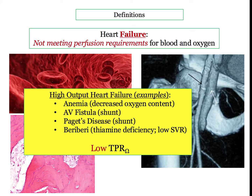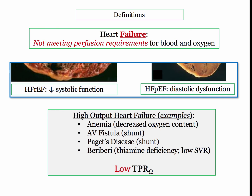In high output heart failure, the cardiac index is frankly elevated, but the underlying conditions — such as anemia or AV shunts — interfere with the peripheral delivery of oxygen. In these conditions, it isn't really a failure of the heart; rather, mitigating circumstances interfere with oxygen delivery. High output heart failure shares the common feature of a failure to adequately perfuse peripheral organs.